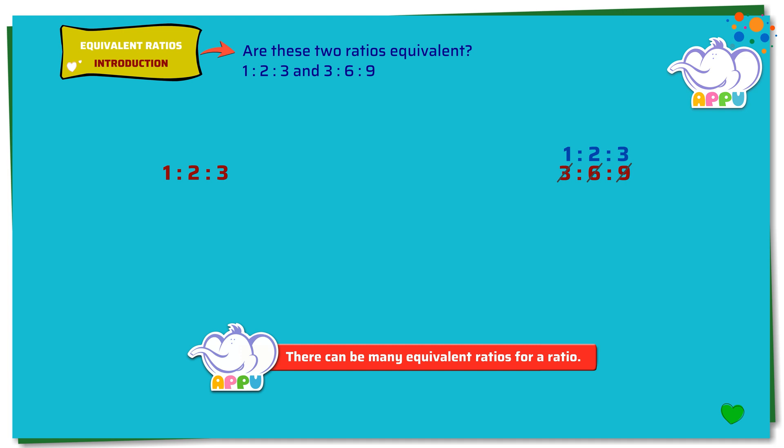The ratio becomes 1 is to 2 is to 3 in its simplest form. We write this as 3 is to 6 is to 9 equals 1 is to 2 is to 3. So the ratios are equivalent ratios.